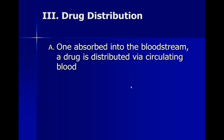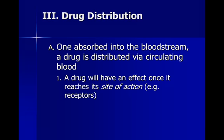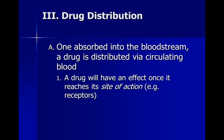Some administration methods send drugs straight into the bloodstream; others require different absorption rates. But once absorbed into the bloodstream, a drug is distributed via circulating blood. A drug will have an effect once it reaches what we call its site of action — wherever it's going to interact with receptors in the body, particularly in the brain. The site of action is where those receptors actually allow that drug to have an effect.